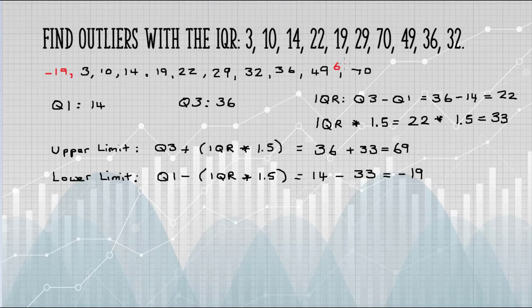The last step is to insert the two numbers we just calculated for our limits into the list of ordered numbers. Anything outside of these limits is an outlier. For this data set, we have one outlier, and that is 70.